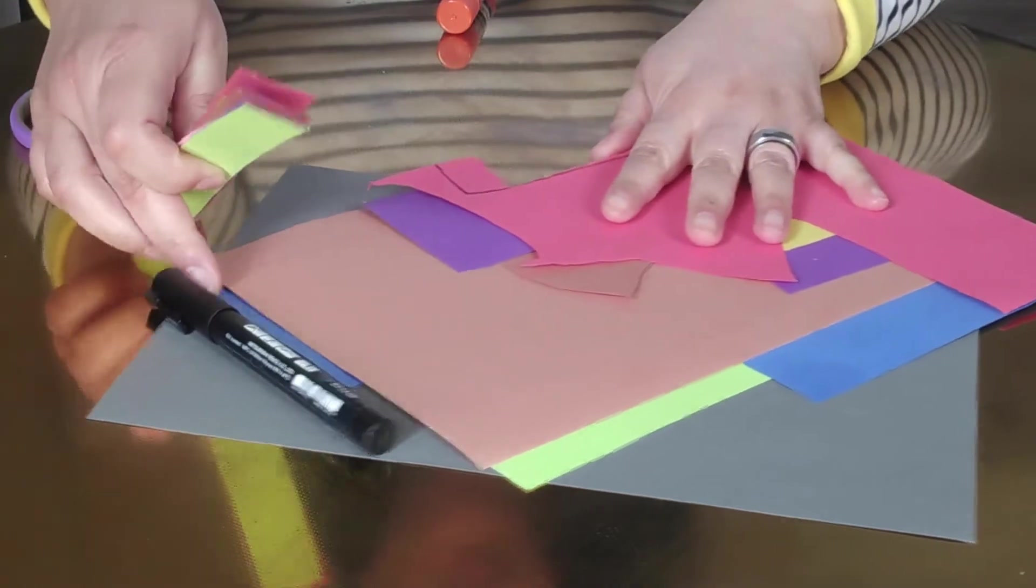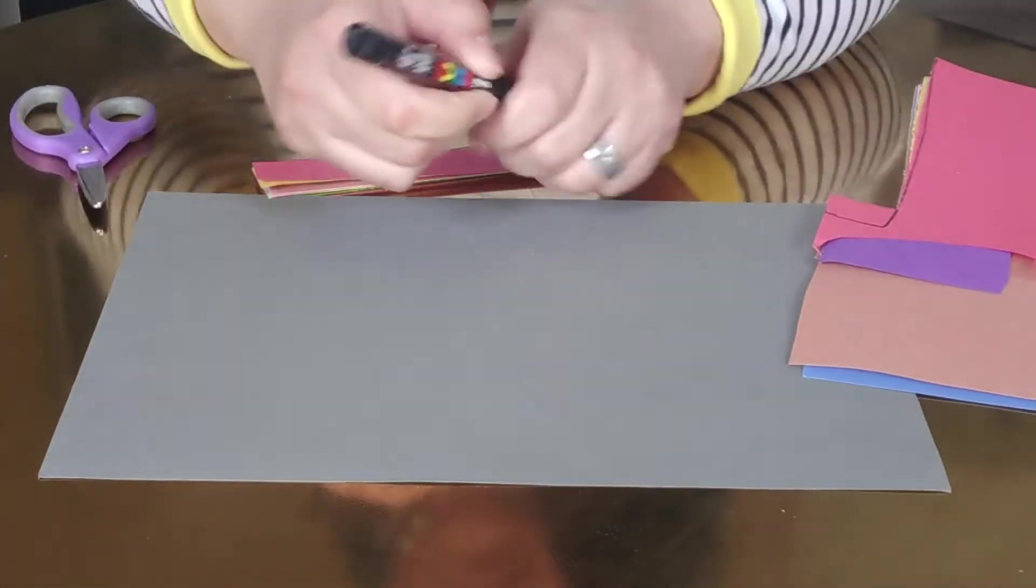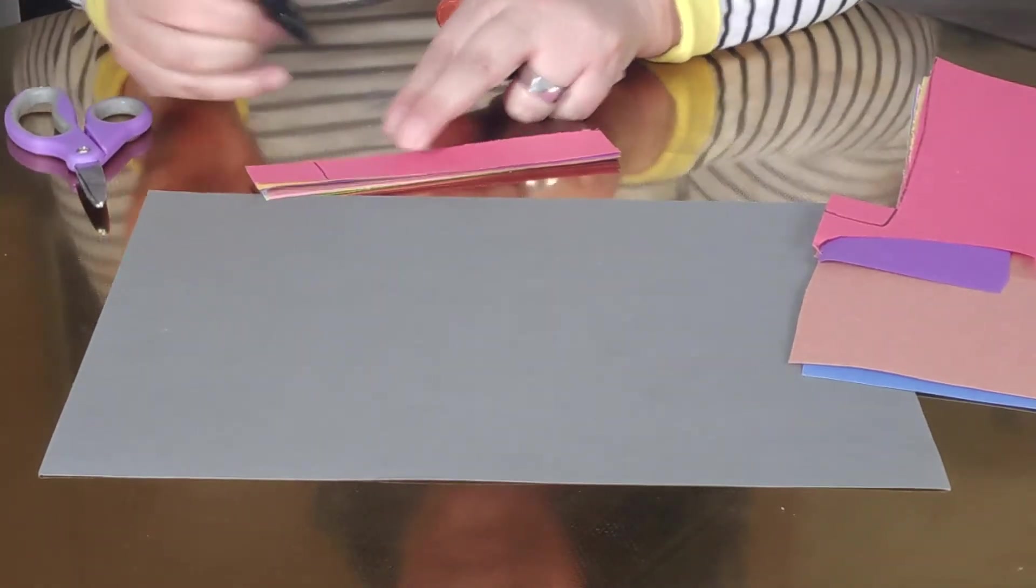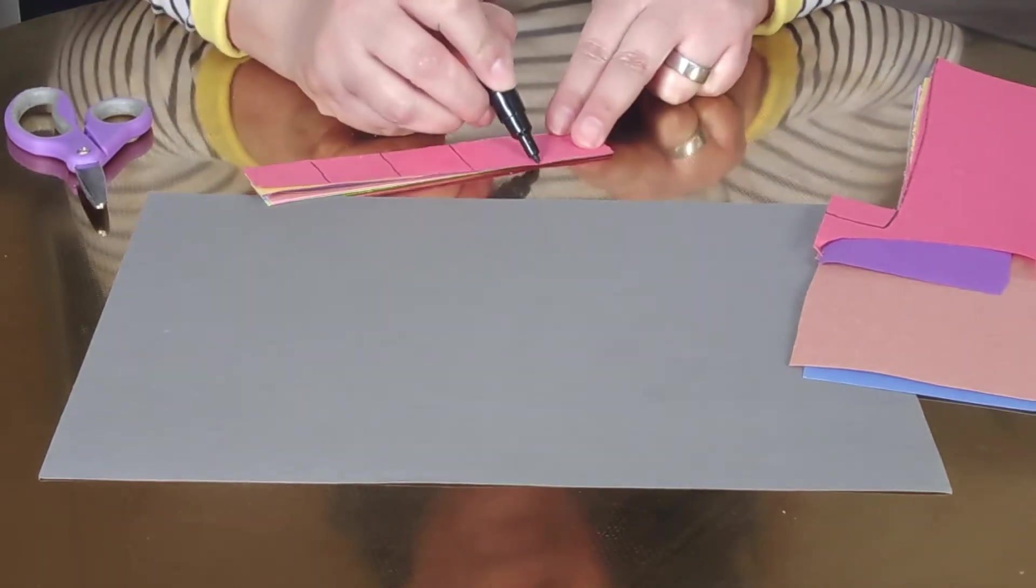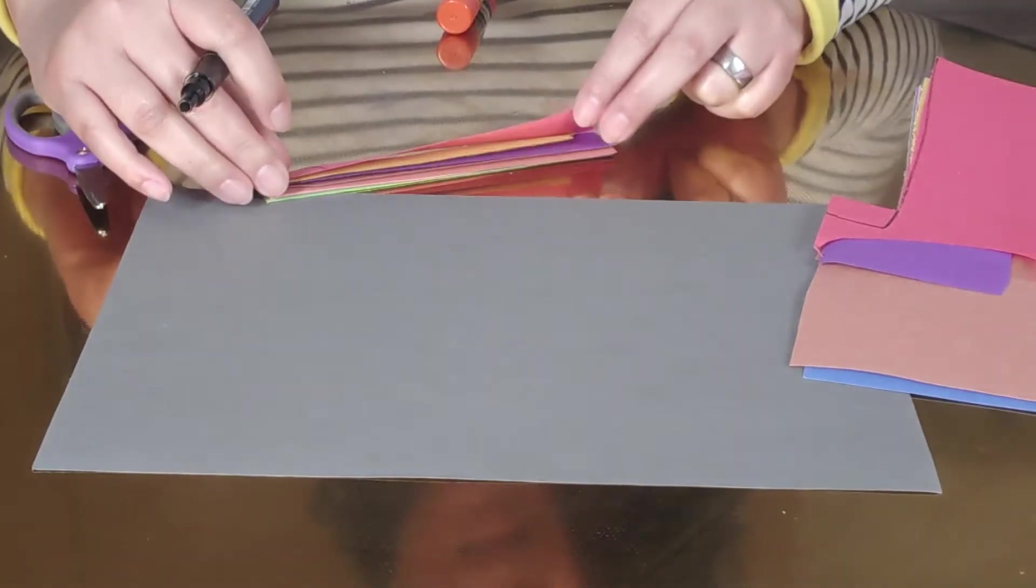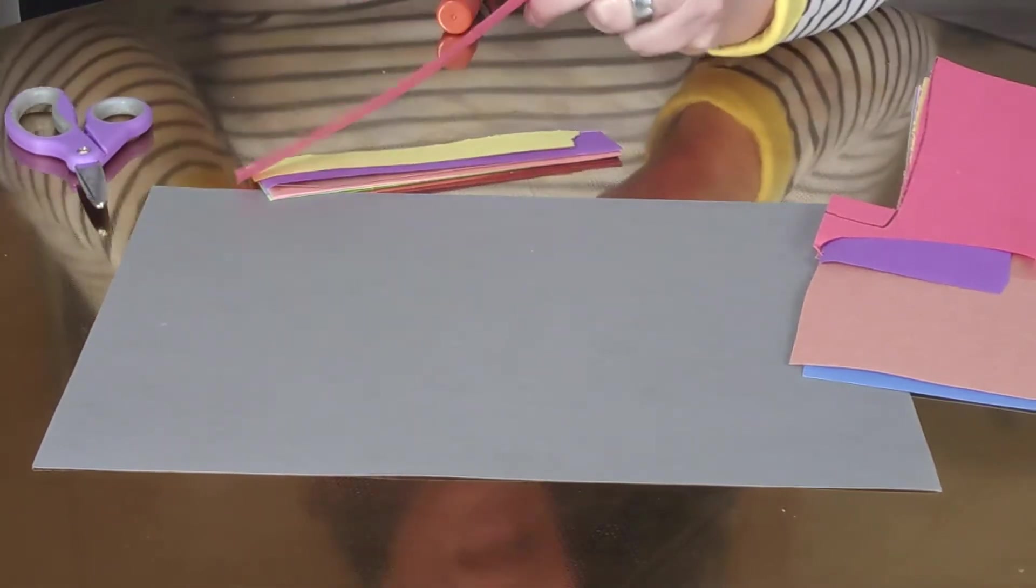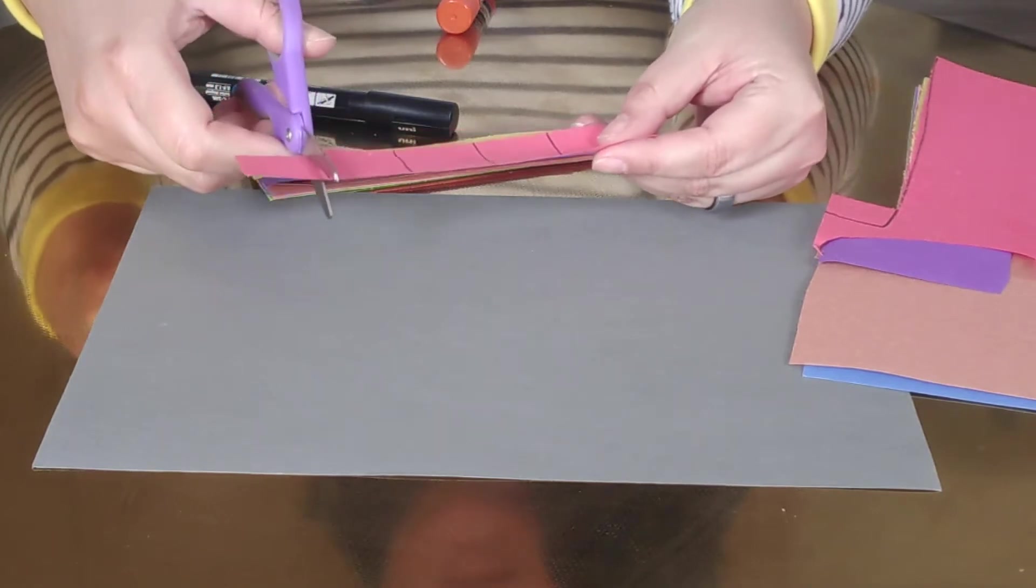Once you have your strips of paper, draw lines on them. Draw lines on each strip of paper and then have your child cut the squares out by cutting all the lines.